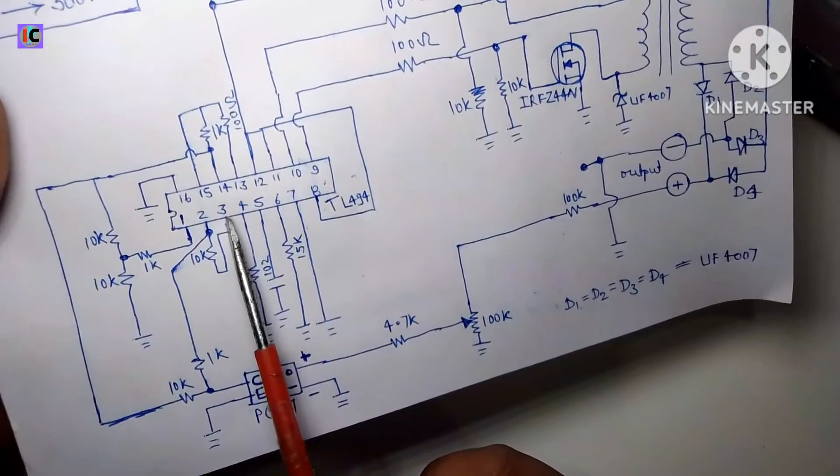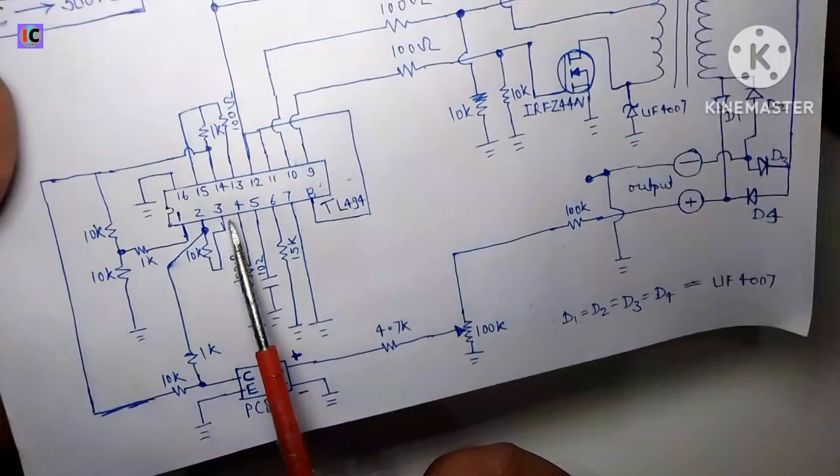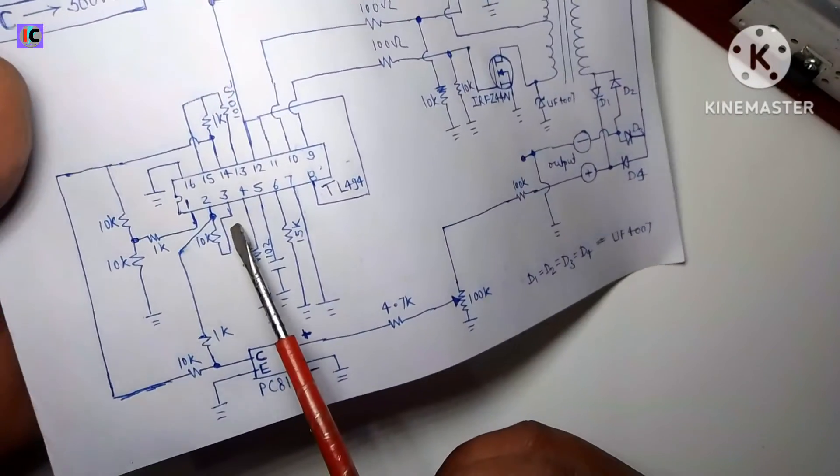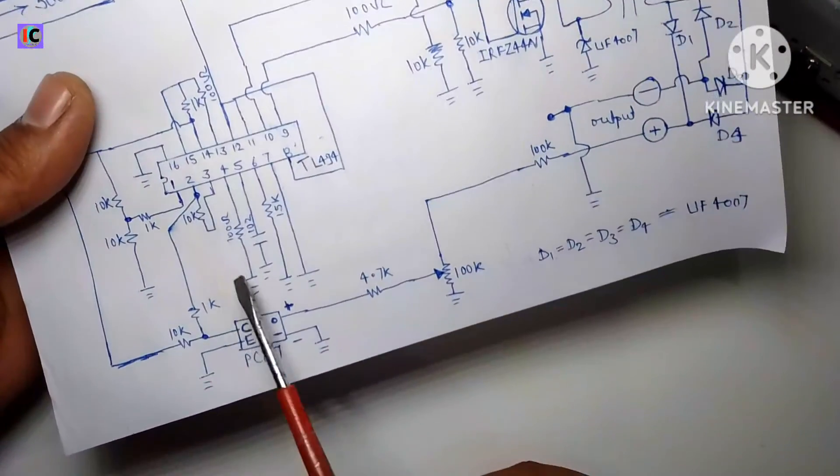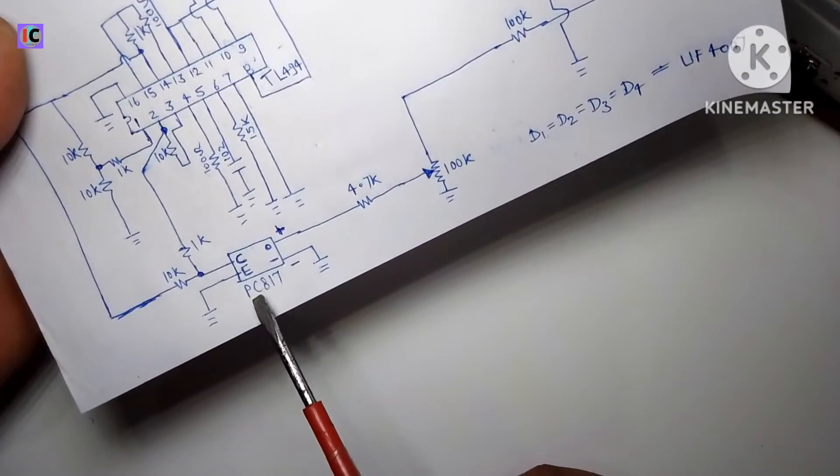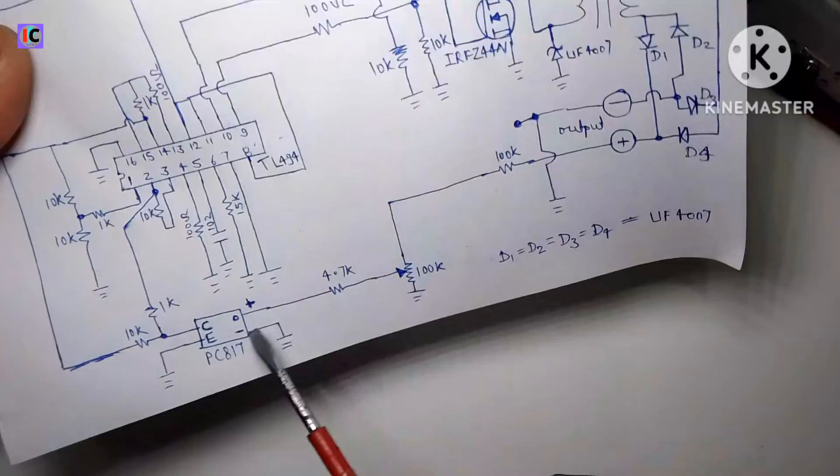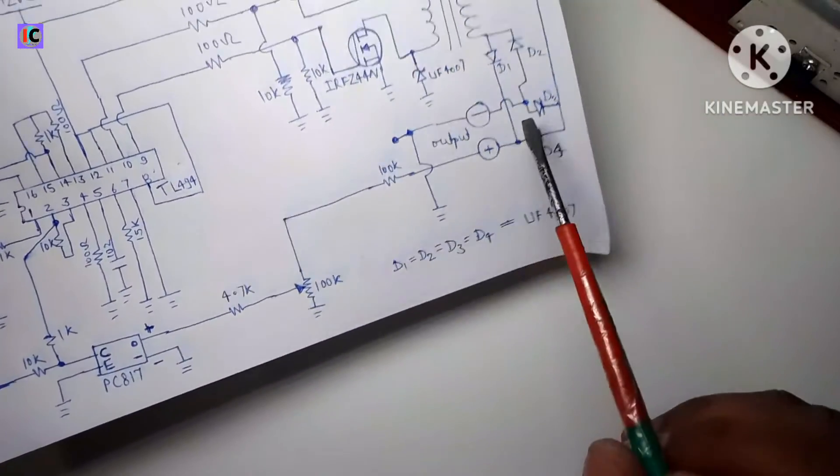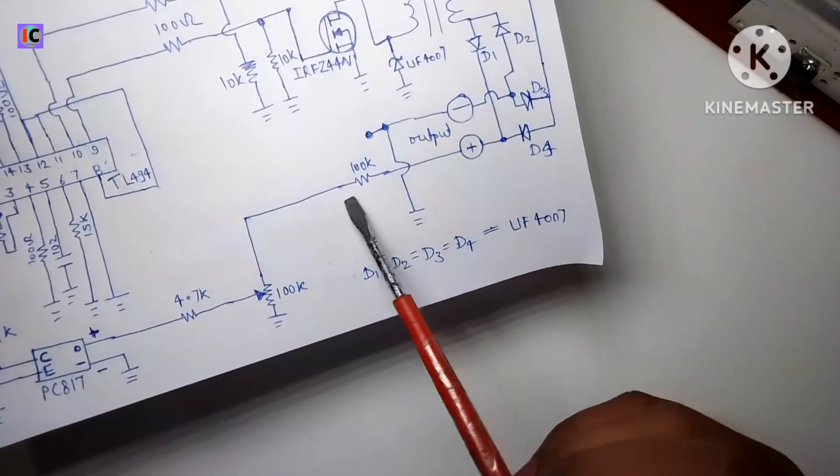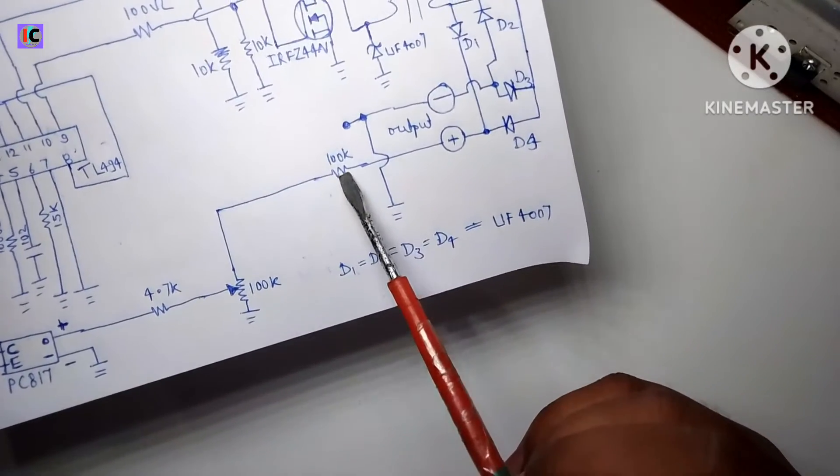and voltage feedback pin which is pin number three. For the duty cycle controlling, here a PC817 optocoupler is given so that we can control output voltage and the feedback loop looks like this. The positive voltage feedback goes